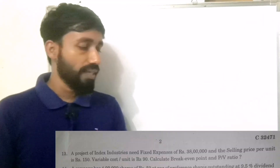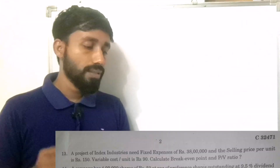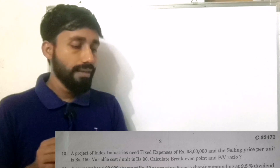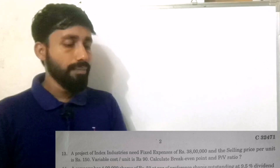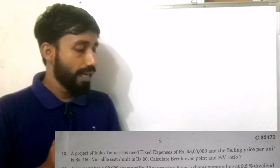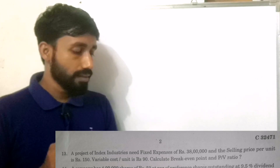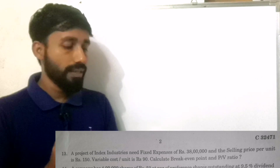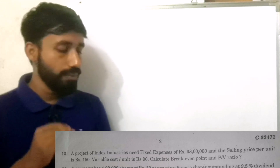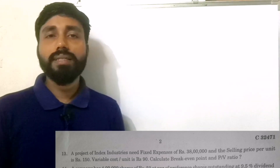A project of Index Industries needs fixed expenses of Rs. 38 lakhs and the selling price per unit is Rs. 150. Variable cost per unit is Rs. 90. Calculate Break-Even Point and PV Ratio.